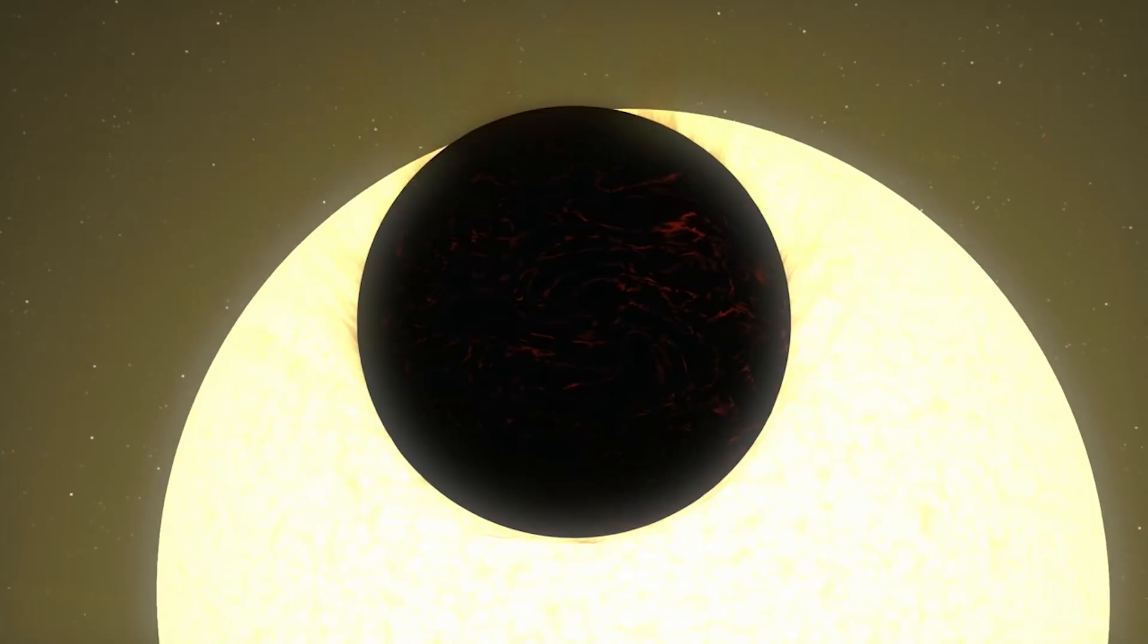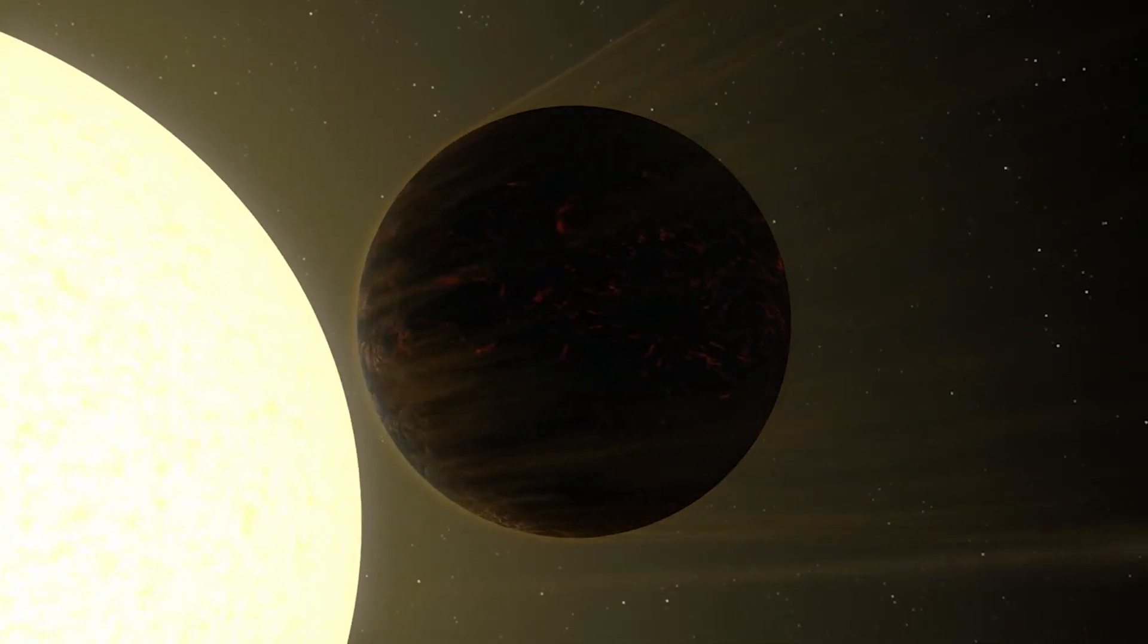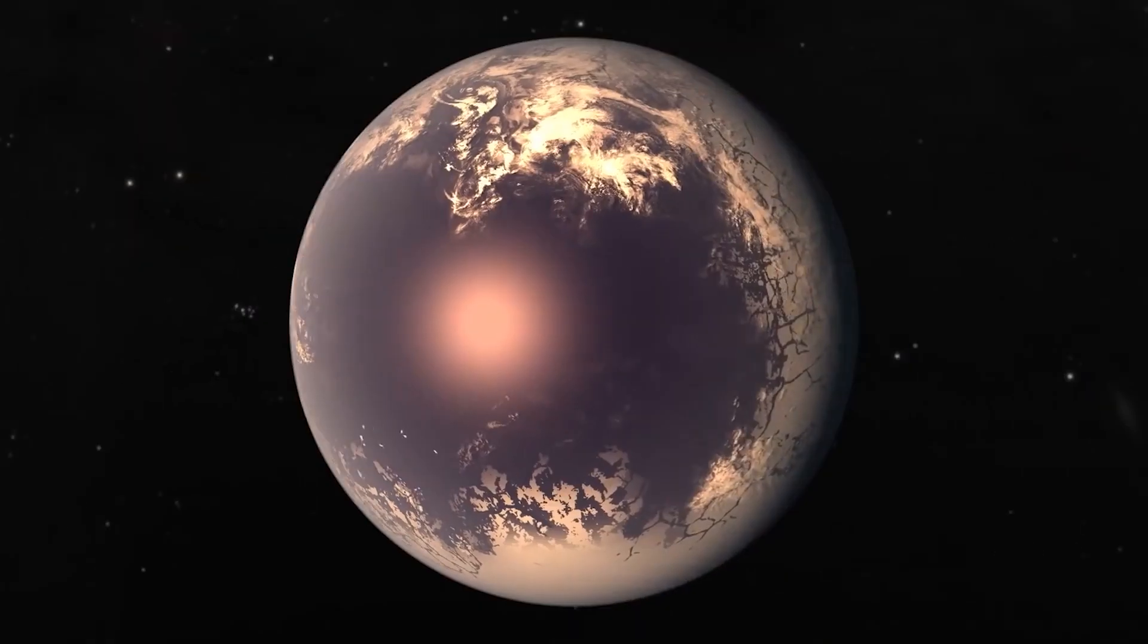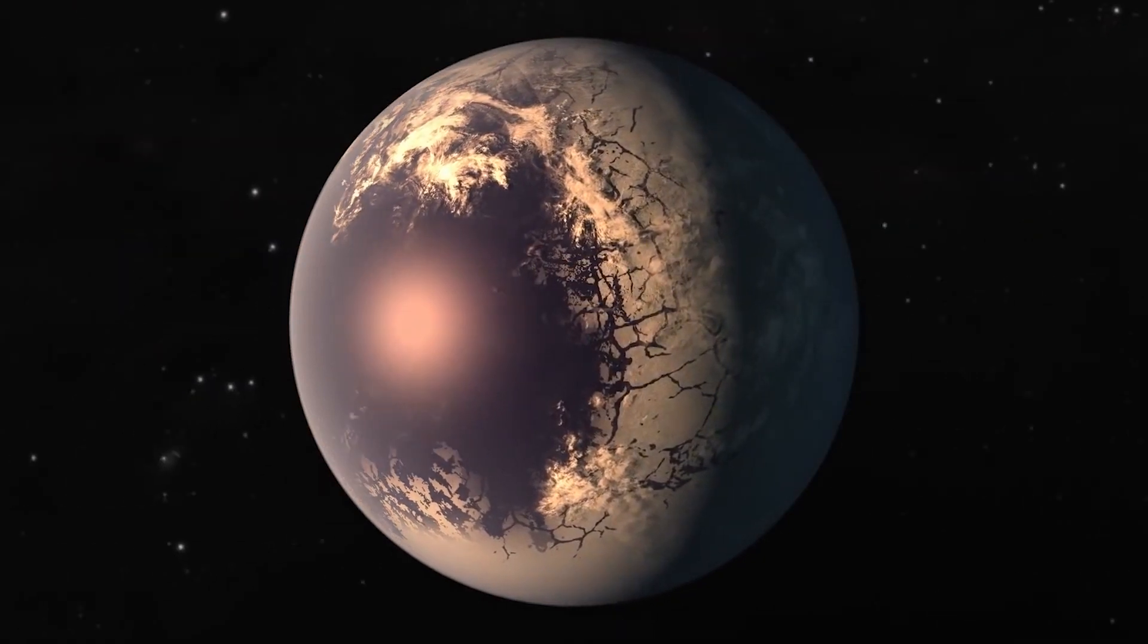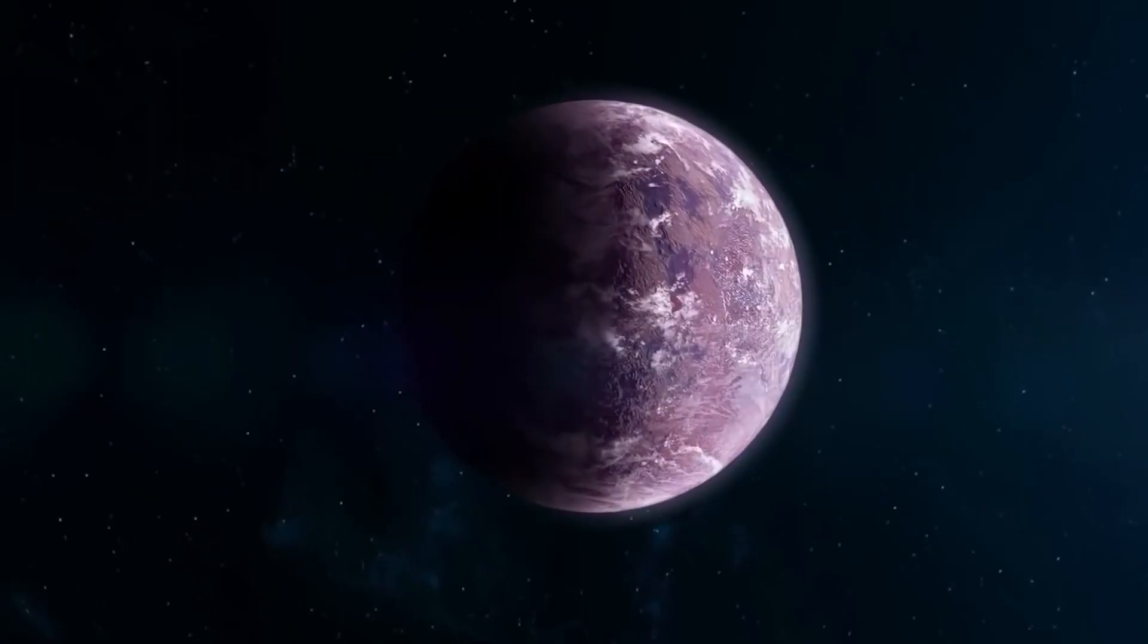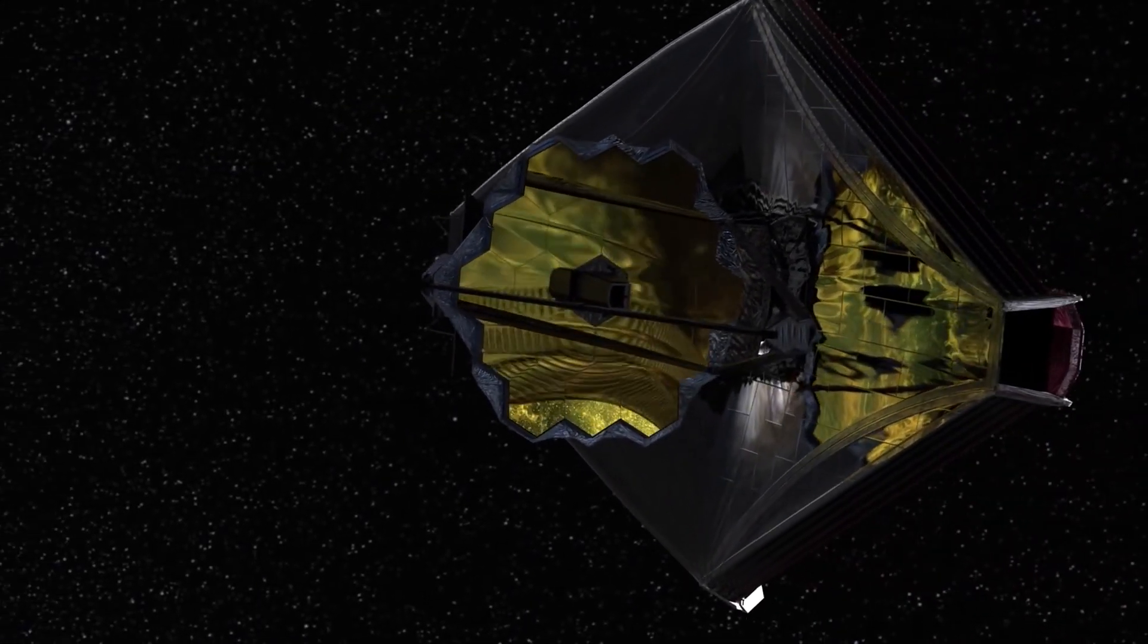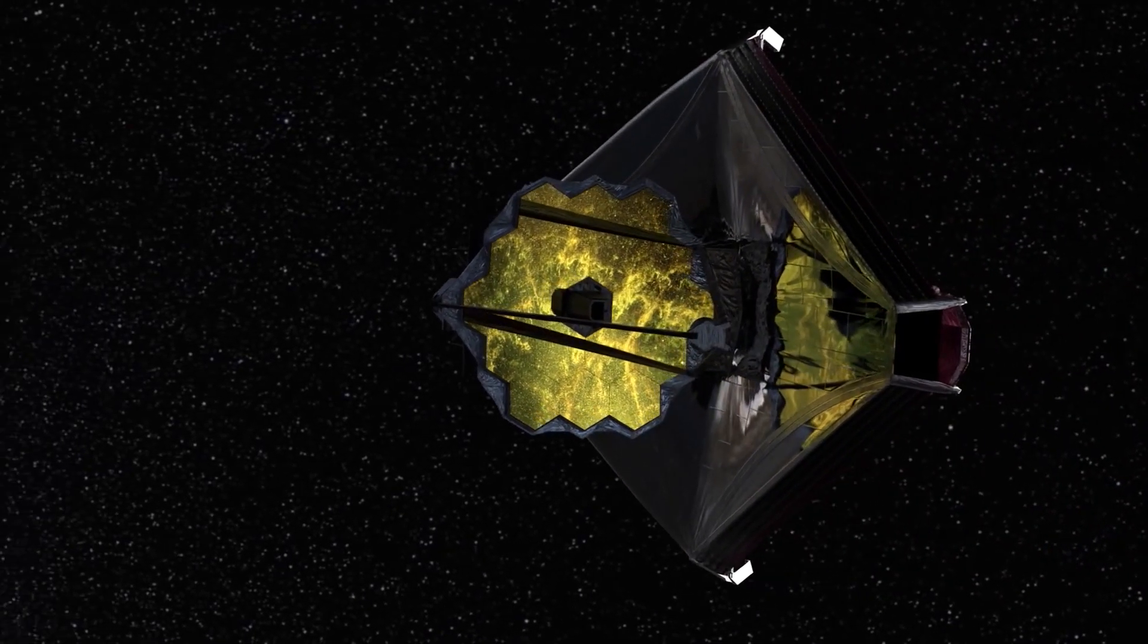Scientists assume that 55 Cancri E is tidally locked to the sun, which means that its one side always faces its sun, raising the temperature on that side to 3,100 degrees Fahrenheit. These extreme conditions on the hot side may have caused its atmosphere to completely evaporate, which will now be confirmed by the James Webb Telescope.